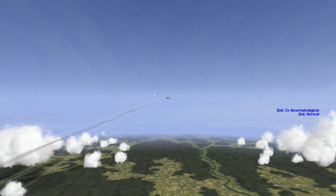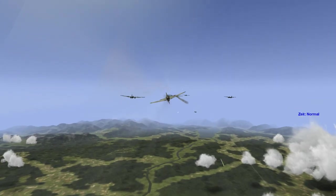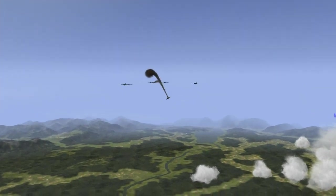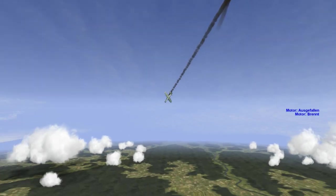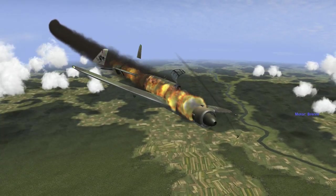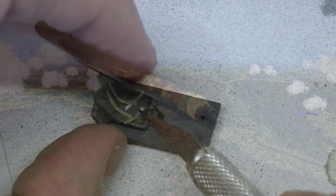The Do 335 was one of the first planes equipped with an ejection seat. In this short sequence I recorded in a video game, you can see how the rear propeller and vertical stabilizer are jettisoned so the pilot can eject safely.